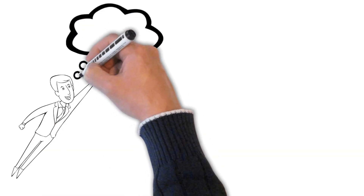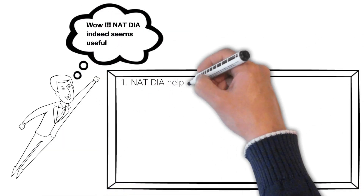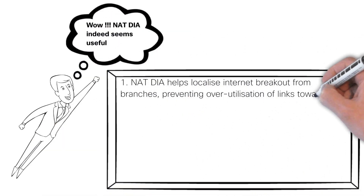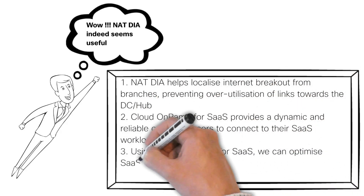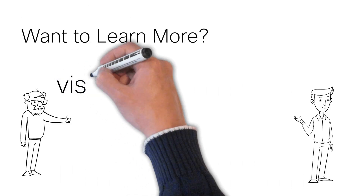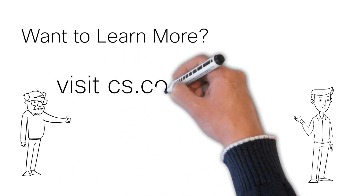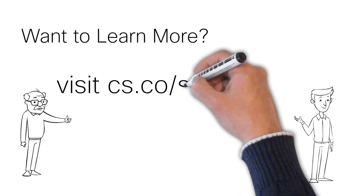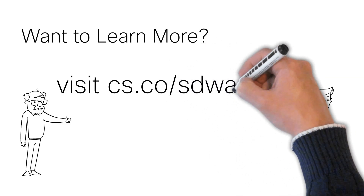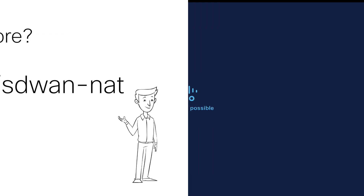NAT DIA is indeed useful. To sum up: NAT DIA helps localize internet breakout, Cloud OnRamp for SaaS helps optimize SaaS user flows, and is supported with SASE tunnels. To learn more about NAT DIA and Cisco Catalyst SD-WAN, visit us at cs.co/SD-WAN-NAT.